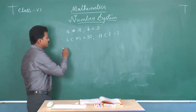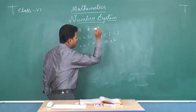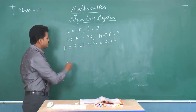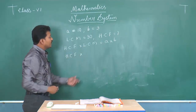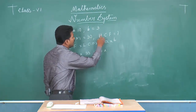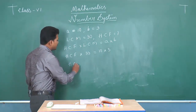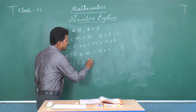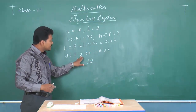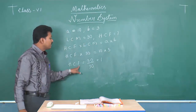The condition is: HCF into LCM is equal to the product of the two numbers, A into B. We do not know the value of HCF. Substituting: HCF into thirty equals ten times three, which is thirty. Transposing thirty to the other side gives HCF equals thirty divided by thirty, which equals one. Therefore, HCF of the two numbers is equal to one.